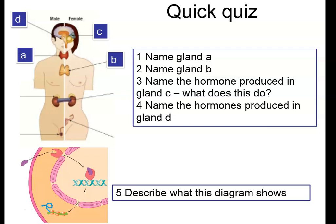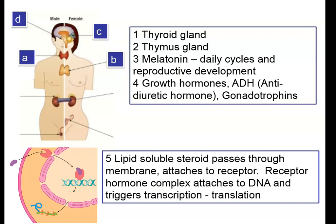Hopefully you've had a chance to do that. So gland A is the thyroid gland, gland B is the thymus gland, gland C is the pineal gland - and remember, that made the hormone melatonin.